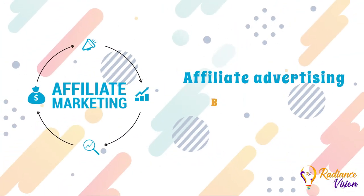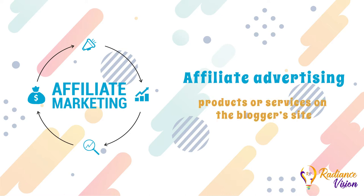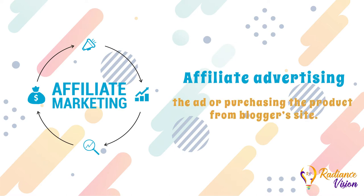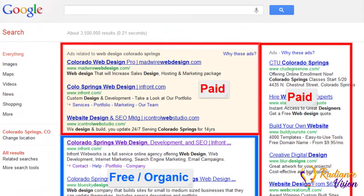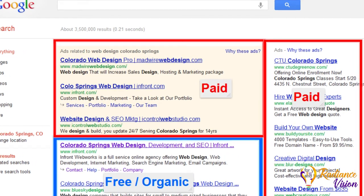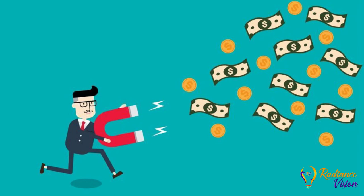6. Affiliate Advertising. An affiliate advertiser pays a blogger to promote the advertiser's products or services on the blogger's site, and the pay-per-click criteria is based on clicking the ad or purchasing the product from the blogger's site. These are the types of PPC ads that appear adjacent to, above, or beneath organic results on search engine result pages, or anywhere a web developer chooses on the website.